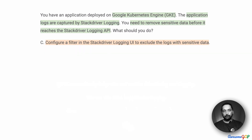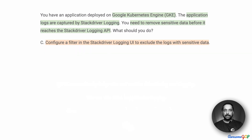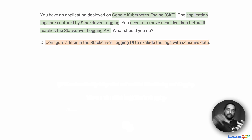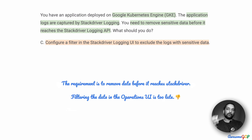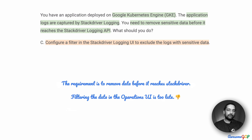The next option suggests that we configure a filter in the Stackdriver logging UI to exclude logs with sensitive data. However, the container has already sent the logs to Stackdriver logging, and we are only excluding them there. But the requirement is to remove the data before it reaches Stackdriver. There is no way to remove the sensitive data just as it is reaching Stackdriver, and if you are doing it in the logging UI, the operations person who already has access can see that data. So it becomes too late, and therefore this option is not useful for us.